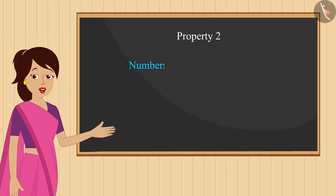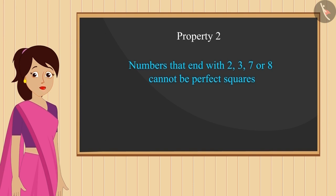So the numbers that end with 2, 3, 7, or 8 cannot be perfect squares.